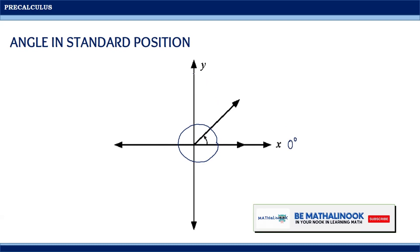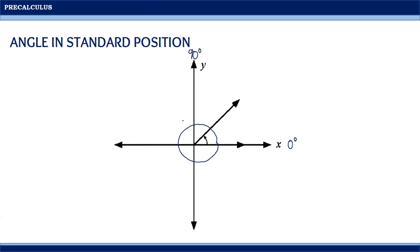When the terminal side coincides with the positive y-axis, then it generates an angle which measures 90 degrees. Furthermore, if the terminal side coincides with the negative side of the x-axis, then the angle being generated measures 180 degrees. Additionally, if the terminal side coincides with the negative y-axis, then the angle being generated measures 270 degrees.